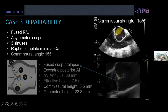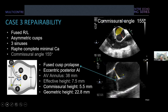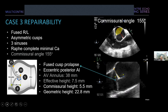Applying repairability science to case three: fused right-left cusps, asymmetric, three sinuses, complete raphae with minimal calcium, commissural angle measured at 155 degrees. There is fused cusp prolapse with eccentric posterior AI. Measurements: annulus 38 mm (quite dilated), effective height 7.5 mm (slightly below the desired minimum), commissural height 5.5 mm (acceptable), and the geometric height of the non-fused cusp — measured in the long-axis view — is well over 20 mm. Overall this should be a repairable valve.